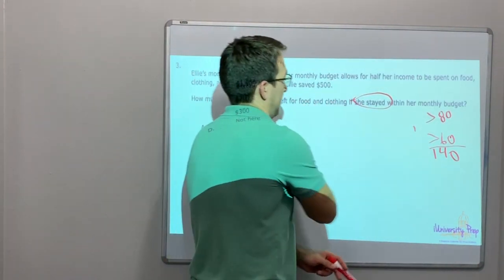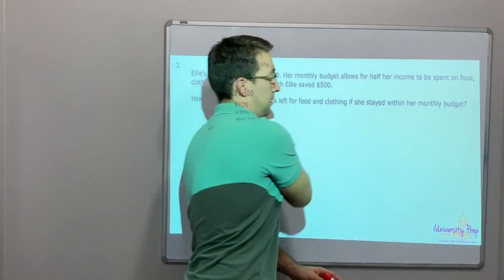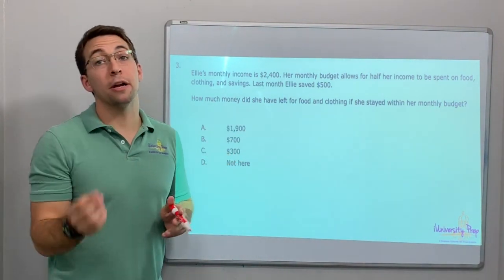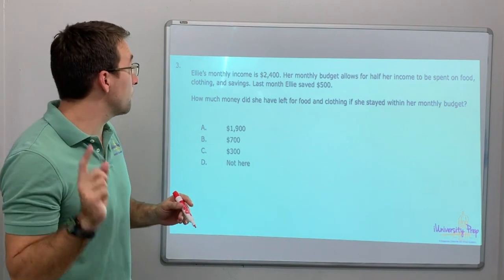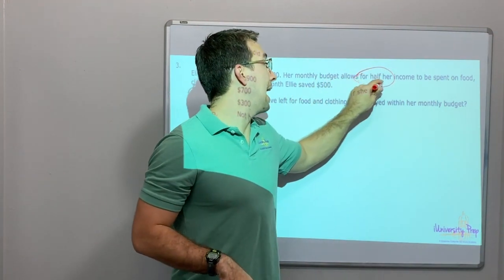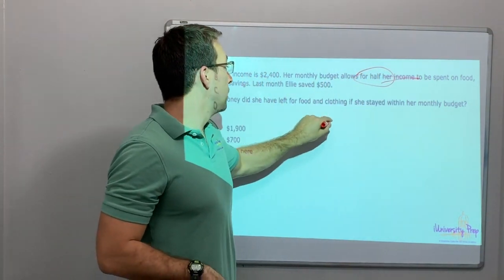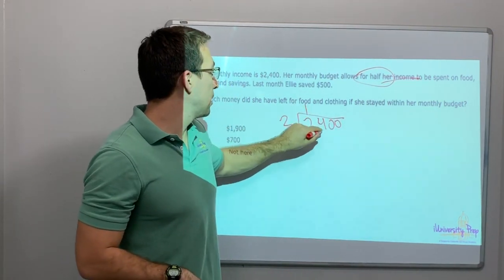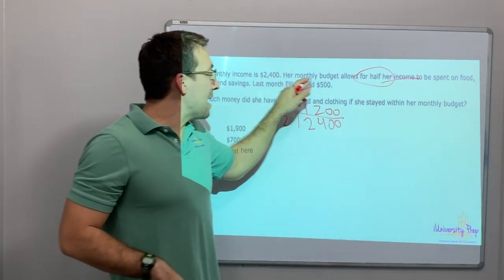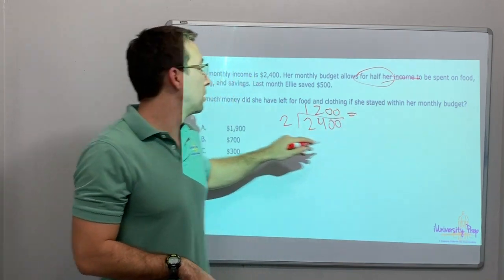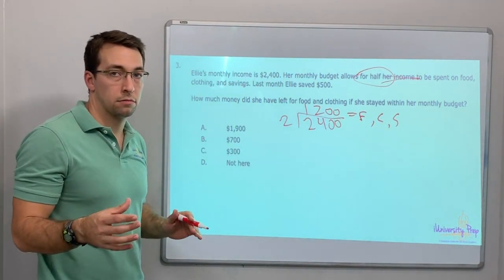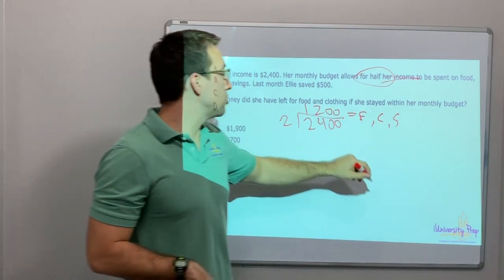Last question: Ellie's monthly income is $2,400. Her monthly budget allows for half of her income to be spent on food, clothing, and savings. Let's figure out half of her income first. $2,400 divided by 2 equals $1,200. So half of her income — $1,200 — equals food plus clothing plus savings.